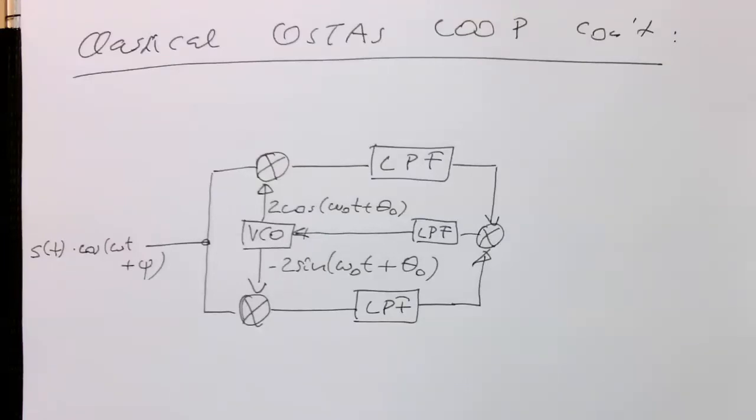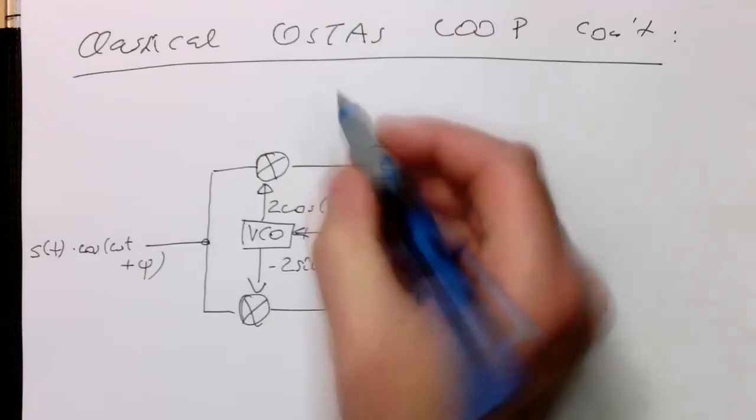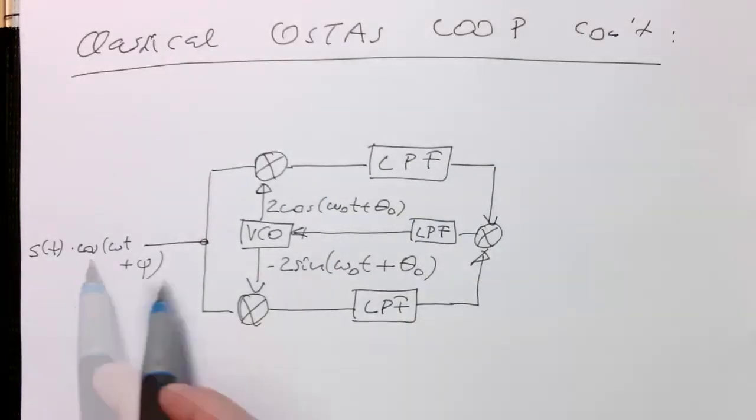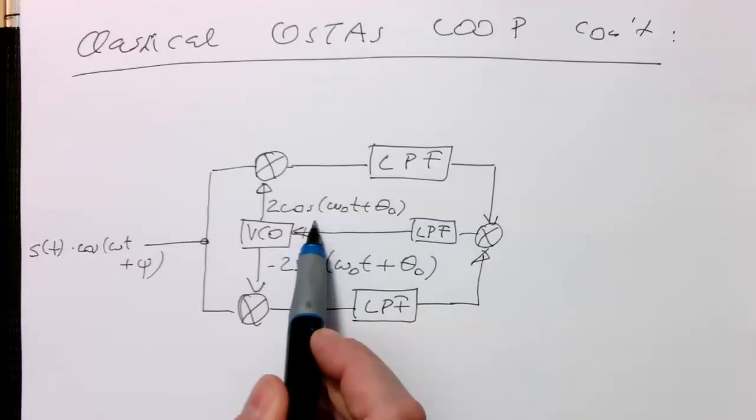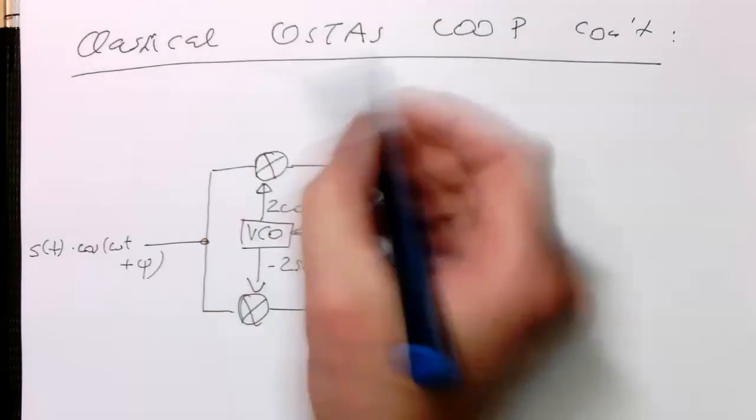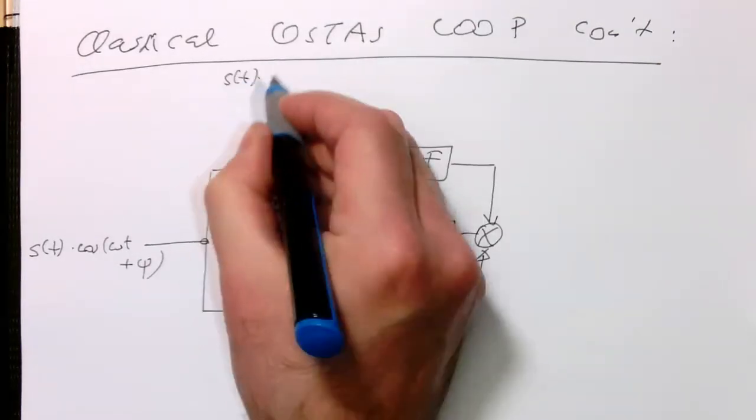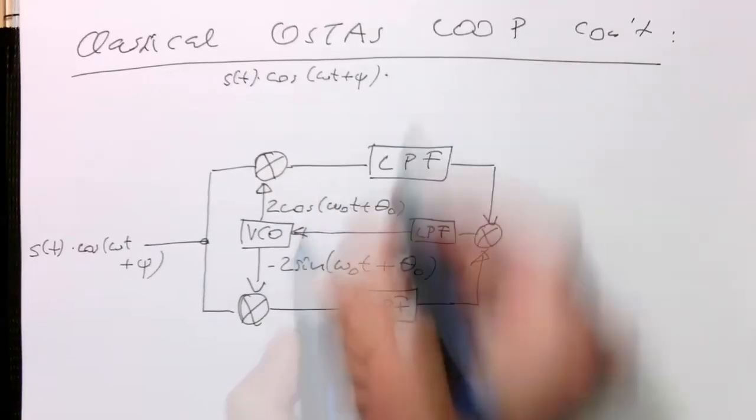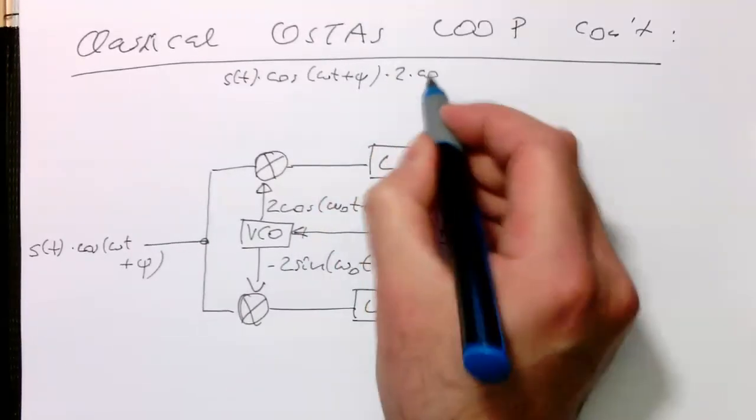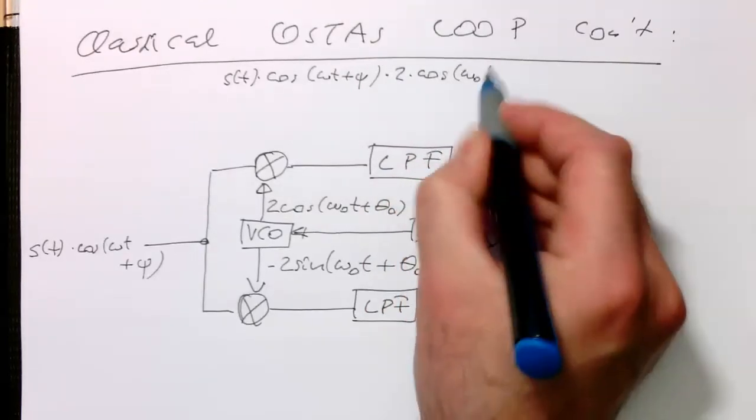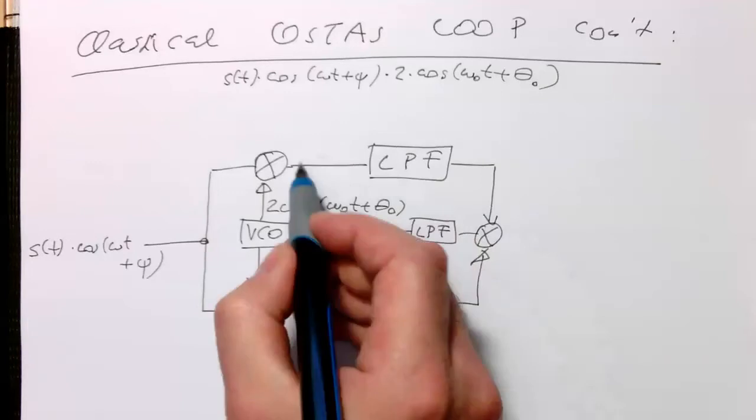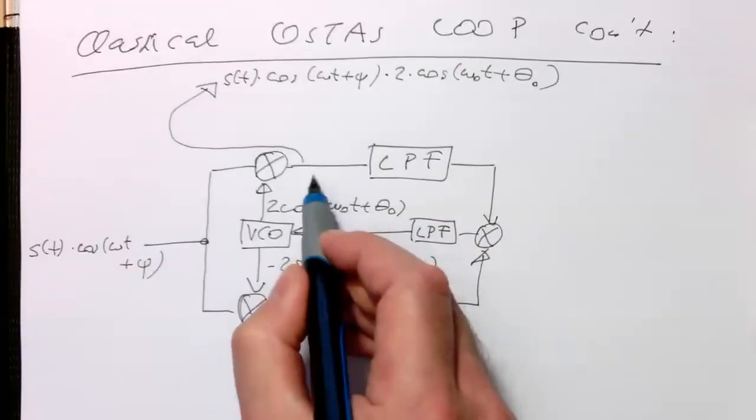And so therefore we can analyze this circuit and see why this is giving us this result. So for example, if we're looking here at this pathway, then this is multiplied, the S of t multiplied with this cosine term here, and then with the other cosine term here. So at this point here we have something like S of t, cosine of omega t plus c, and then multiplied by 2 cosine of omega 0 t plus theta 0. So that's what is happening here at this point in the circuit.